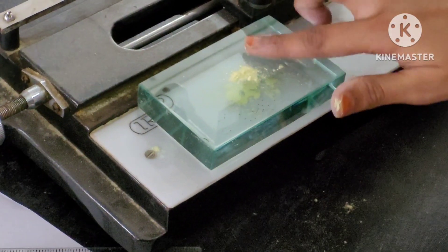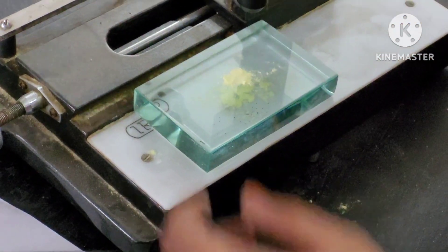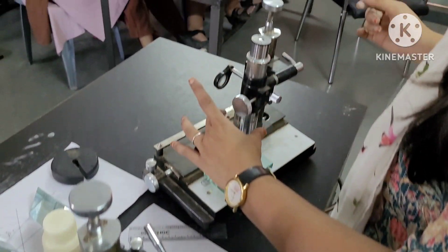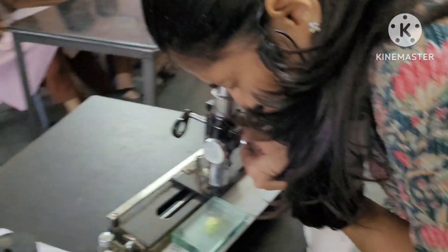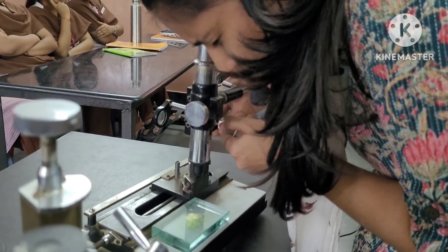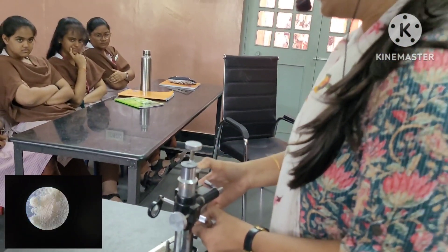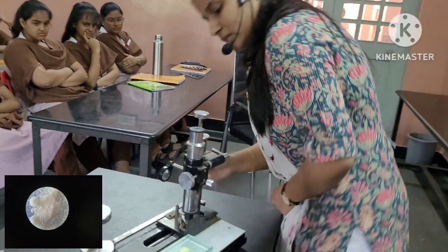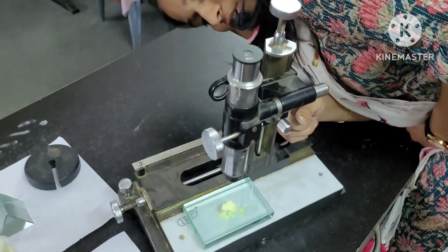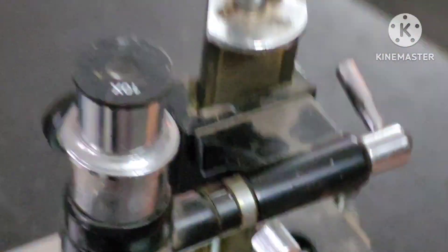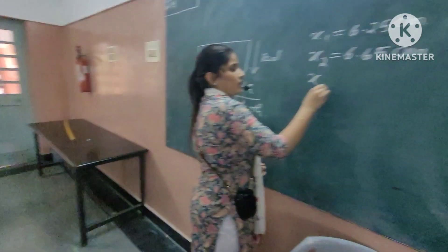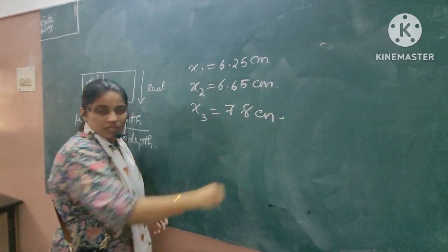For the third reading, you will take some more lycopodium powder and place it on top of the glass slab. Once you have placed it on top, again you should not disturb the eyepiece. You will just loosen this portion and focus it again. The third time, I am getting a clear image of the powder. Once again, you take the reading, which is equal to 7.8. So X3 is equal to 7.8 centimeter.